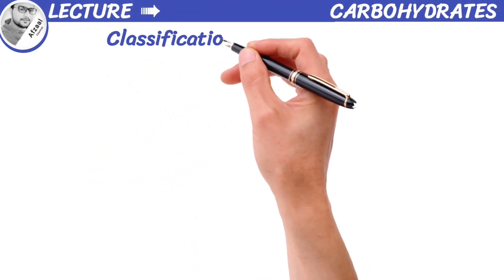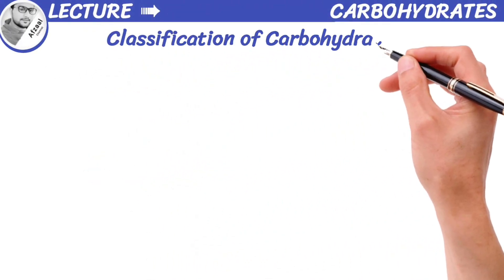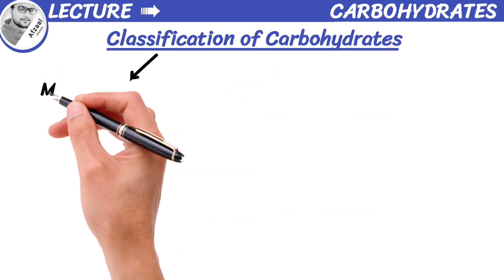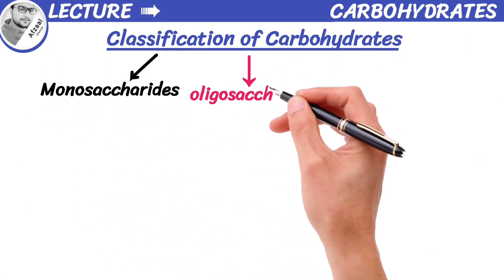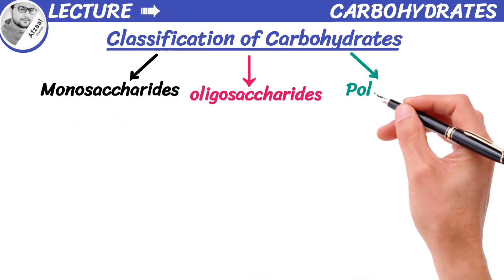Carbohydrates are classified into monosaccharides, oligosaccharides, and polysaccharides.